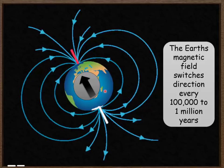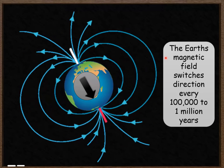So this is what it would look like normally. Then every 100,000 to a million years the magnetic field reverses in direction.